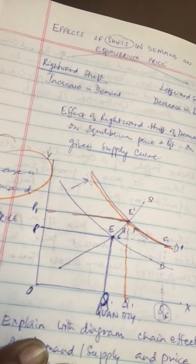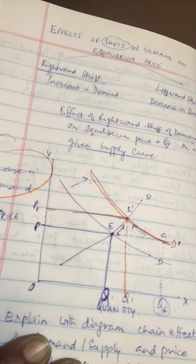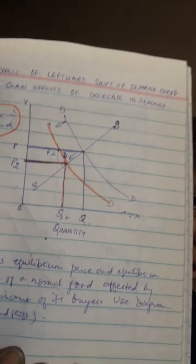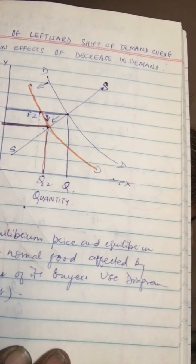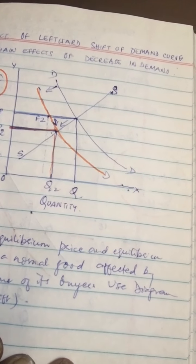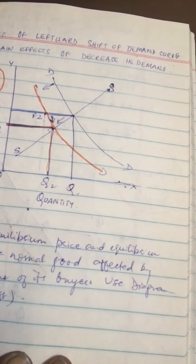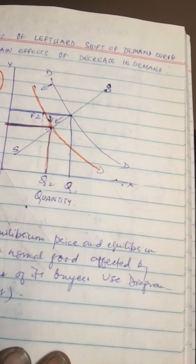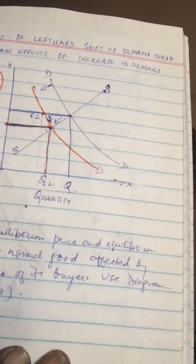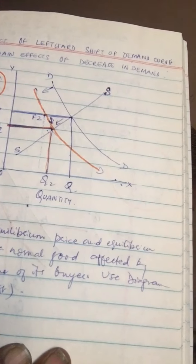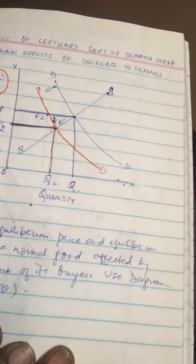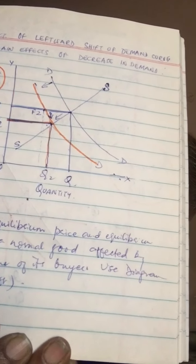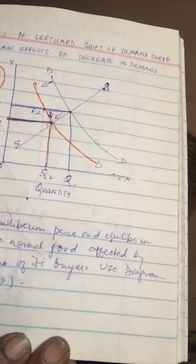Now we will take the leftward shift. Look at this diagram. Again, let's start from the initial situation of equilibrium point E, where equilibrium price is OP and demand equals supply equals OQ. Now we are going to talk about D2D2, which shows the decrease in demand — the effect of a leftward shift of the demand curve.